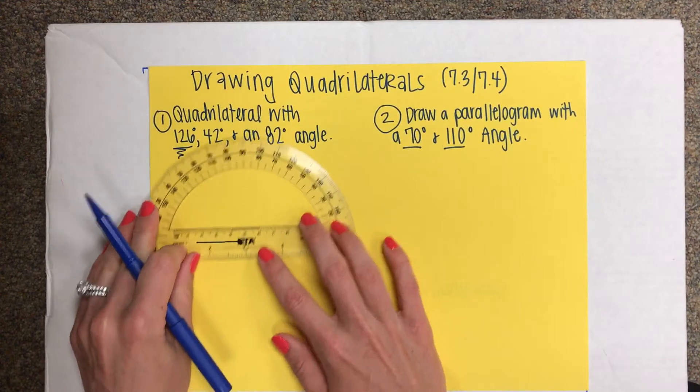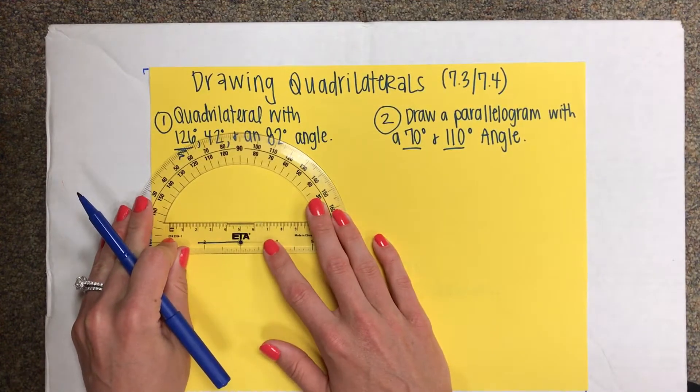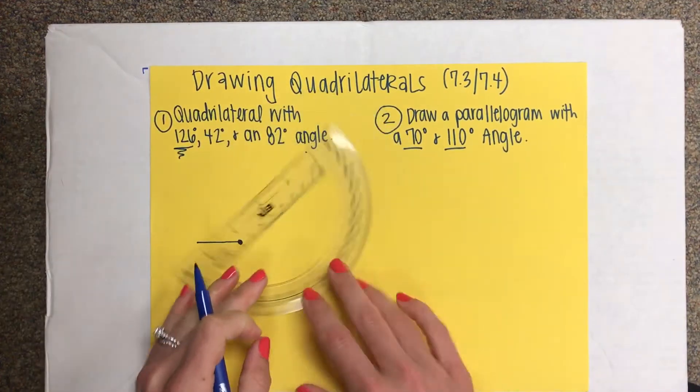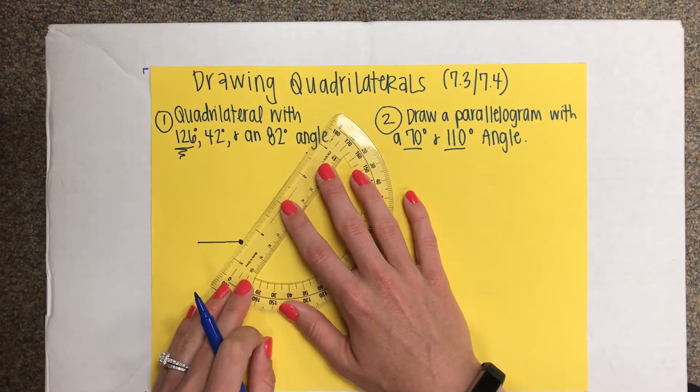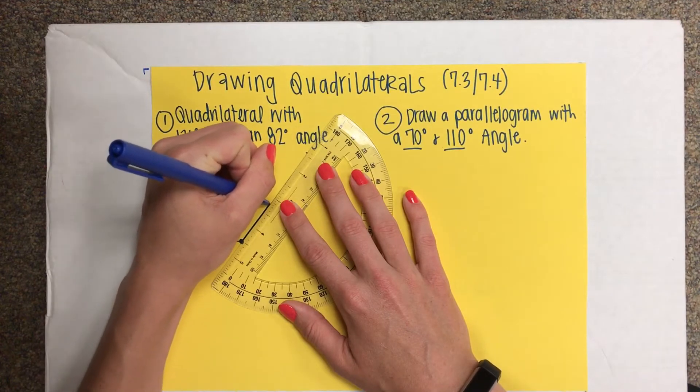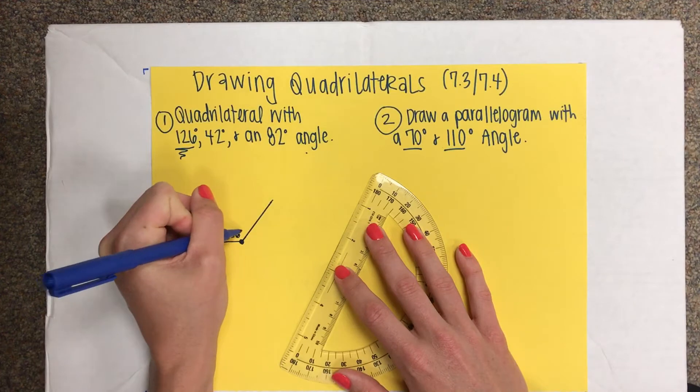Next, I'm going to find 126 degrees. 126 will be all the way over here. Make my tick mark, and I connect the tick mark to the dot. I'm going to go ahead and label 126.